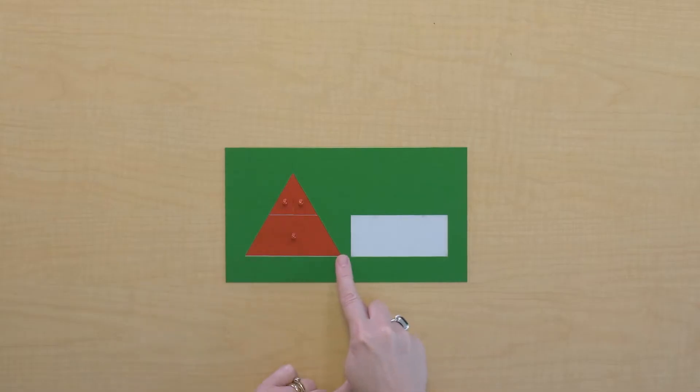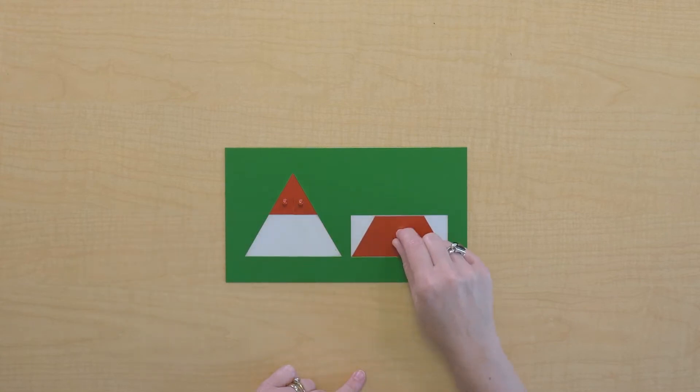What do I call this part of the triangle? This is our base of the triangle. I'm wondering how this triangle's base relates to the rectangle's base. Let's take a look. Oh, their bases are the same. Interesting.